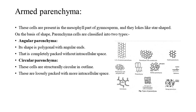Armed parenchyma cells are present in the mesophyll part of gymnosperms and they look star-shaped. On the basis of shape, parenchyma cells are classified into two types: angular parenchyma, which has a polygonal shape with angular ends and is completely packed without intercellular space; and circular parenchyma, which is structurally circular in outline and is loosely packed with more intercellular space.